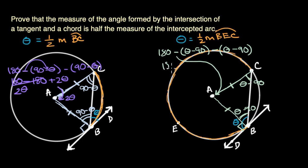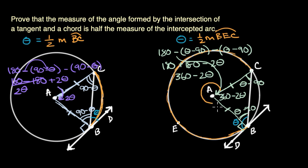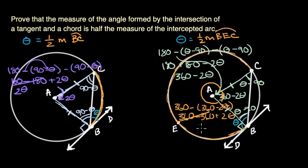Based on that, this central angle is going to be 180 minus (theta minus 90) minus (theta minus 90). That gives us 180 plus 90 plus 90 minus two theta, which equals 360 minus two theta. This larger angle plus this angle adds up to 360 going all the way around the circle, so the major arc's central angle is 360 minus (360 minus two theta), which equals two theta. So in the obtuse case, the angle also intersects the major arc with measure two theta, confirming that theta equals half the intercepted arc.